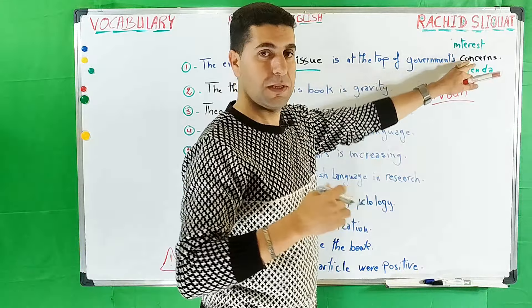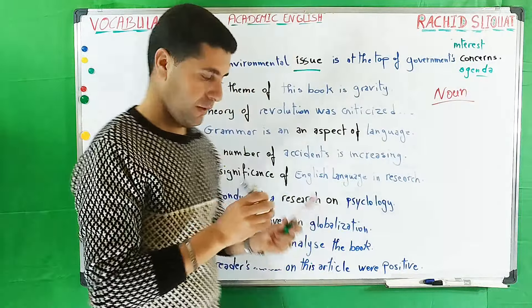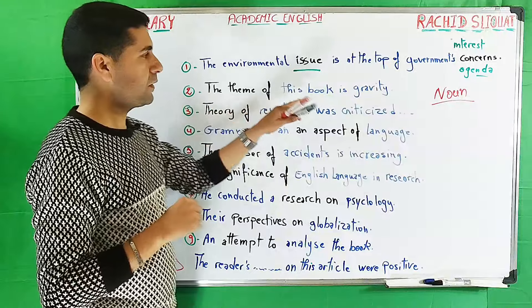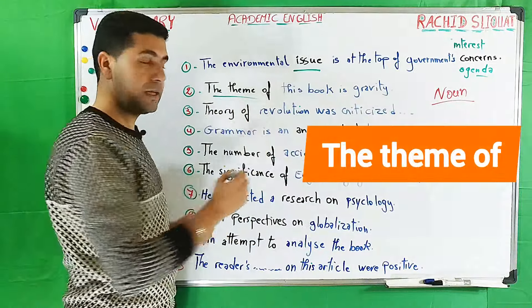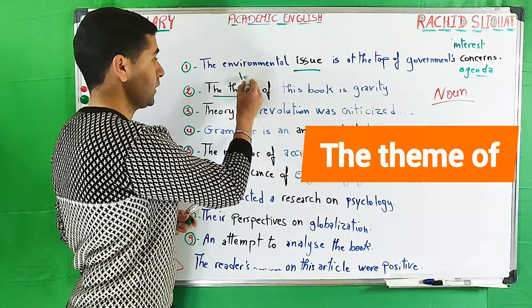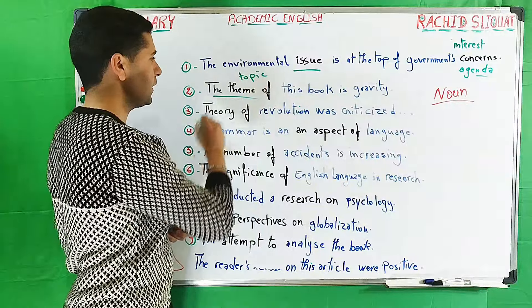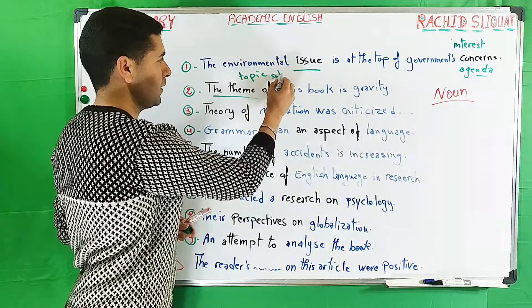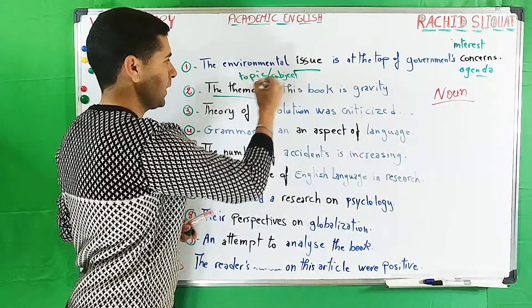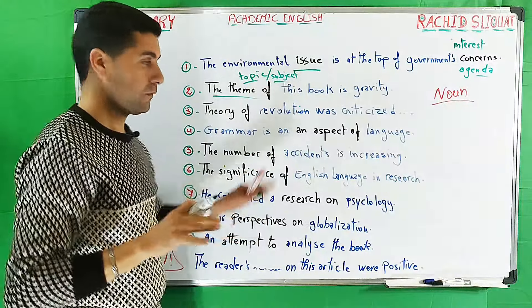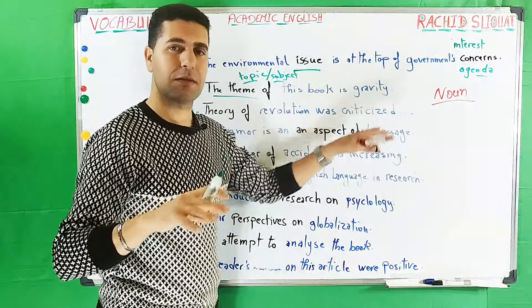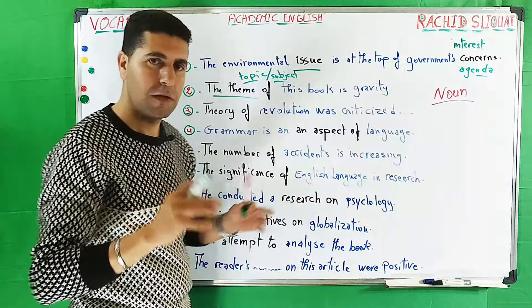Number two: 'The theme of this book is gravity.' When I say the theme of, we can say the topic, or the subject. So the topic or subject of this book is gravity—what the book is all about.